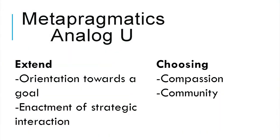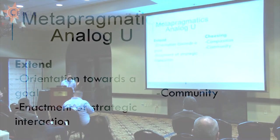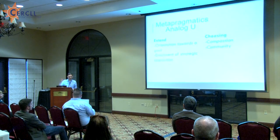Finally, on the extend and choose plane here — meta-pragmatics is generally much more oriented towards a goal. Mindfulness is more of a non-judgmental disposition. But on the right there, compassion is a sort of orientation towards a disposition. On the extend side for meta-pragmatics, enactment of a strategic interaction — a goal-oriented question of what do I want to achieve and how do I move towards it? On the right side, community — not a specific goal so much as a general movement towards an integrative community-oriented experience.